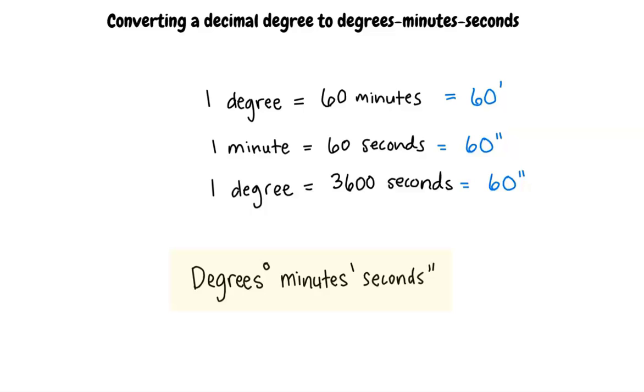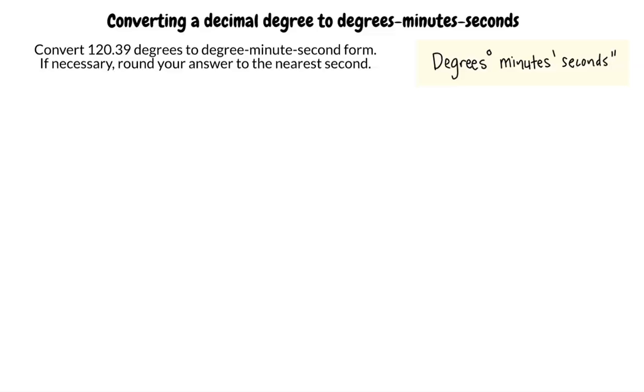Let's do an example to find out how to convert decimal degrees to degrees-minutes-seconds. Convert 120.39 degrees to degree-minute-second form. If necessary, round your answer to the nearest second.